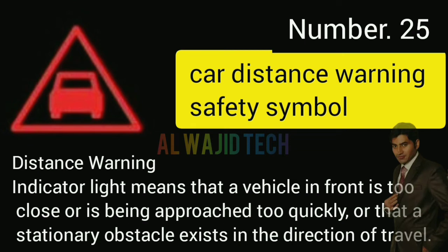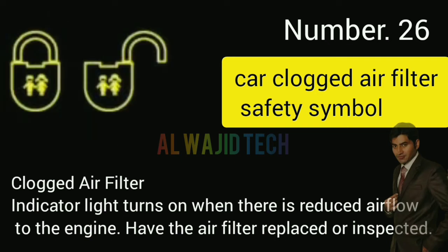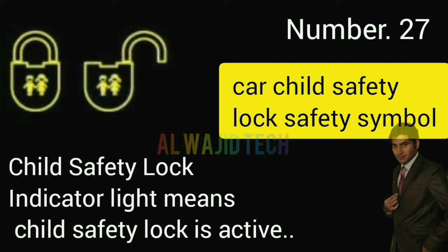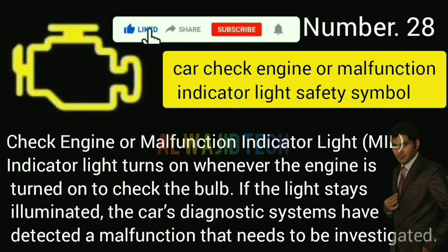Number twenty-six: Clogged air filter. The clogged air filter indicator turns on when there is reduced airflow to the engine — have the air filter replaced or inspected. Number twenty-seven: Car child safety lock. The child safety lock indicator means the child safety lock is active.